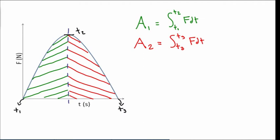Now, let's divide this graph into two. We have the green area and the red area. And at t1, we're going to have our initial velocity. At t2, we're actually going to have zero velocity. And at t3, we're going to have our final velocity.